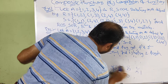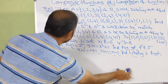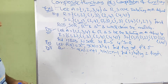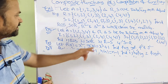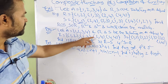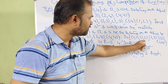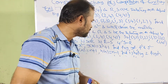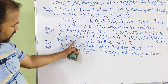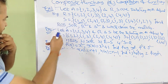Now let us see the second example. Let A equal to {1, 2, 3, 4}. Here also we have only one set. R and S are relations on A defined by R = {(1,2), (1,3), (2,4), (4,4)} and S = {(1,1), (1,2), (1,3), (2,3), (2,4)}. We need to compute R∘S, S∘R, R−S, and S−R.